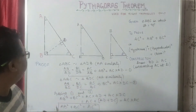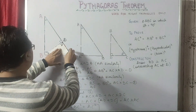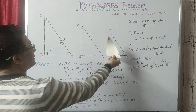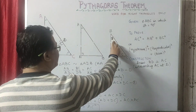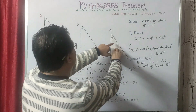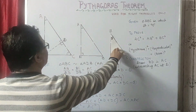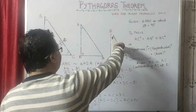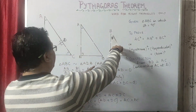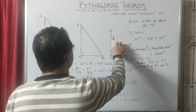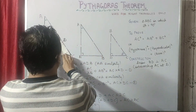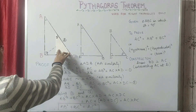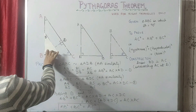Now we come to our second triangle: triangle BDC. If we flip triangle BDC and place it alongside triangle ABC, we can easily see these two are also similar. Why? Because angle B is 90 degrees and angle D is also 90 degrees, and angle C is the same in both triangles. So these two are also similar triangles — they differ only in size but are very similar.